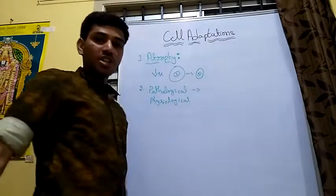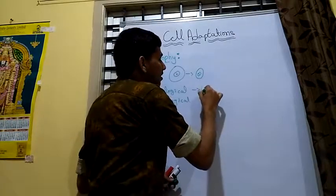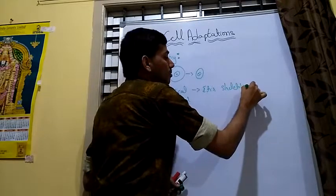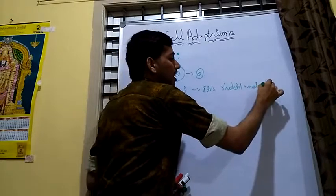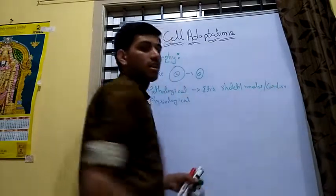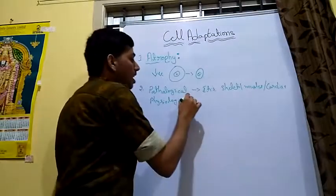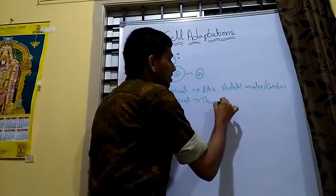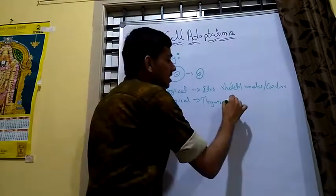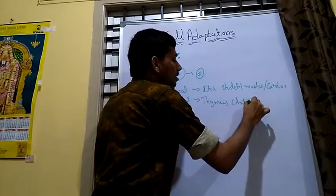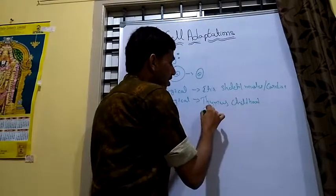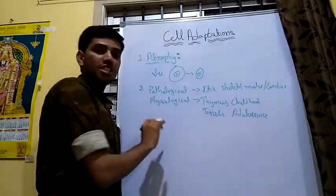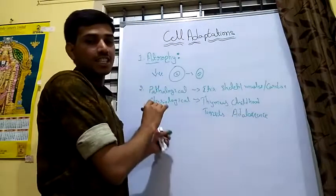In pathological atrophy, it is commonly seen in skeletal muscles and cardiac muscles. In physiological atrophy, it is commonly seen in the thymus — the thymus undergoes atrophy in childhood — and in the tonsils, which undergo atrophy in adolescence. Physiological means a normal phenomenon, while pathological means any disease condition leads to atrophy.